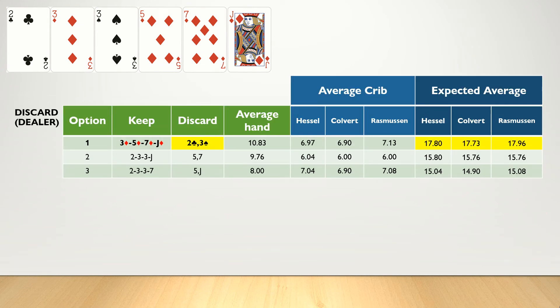As dealer, we see that keeping the flush and discarding the two, three to our own crib is our best option because it will maximize our total point potential. We would be keeping, on average, nearly 11 points in our own hand and, on average, seven points in our crib hand. The expected average for this hand is 17.83 points, which is over two points more than the next best option, keeping the two, three, three jack and discarding the five, seven to our crib. So keeping the flush is the way to go here, as dealer.